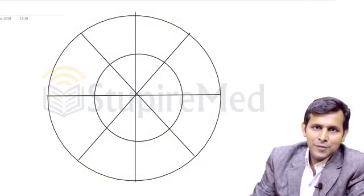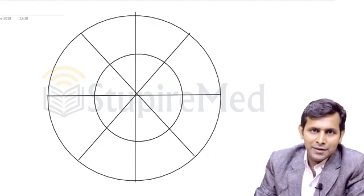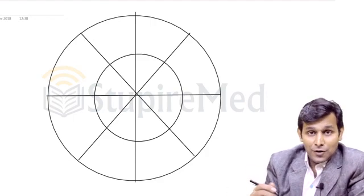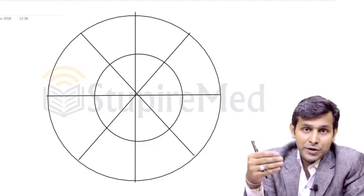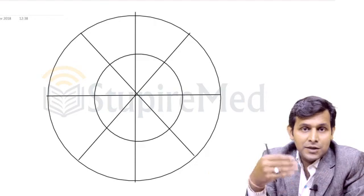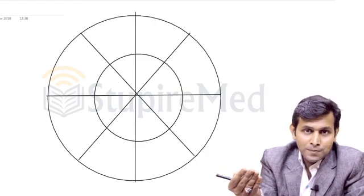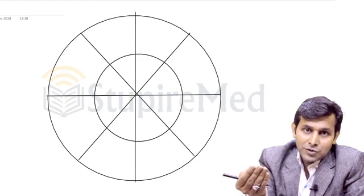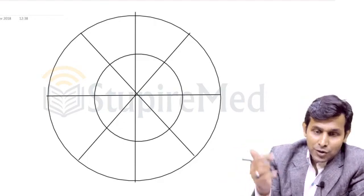Hello friends. Now let us try to learn the cardiac cycle and the phases of cardiac cycle in detail. As we have discussed, the cardiac cycle is 0.8 seconds, in which 0.1 second is the atrial systole, 0.7 second is the atrial diastole, 0.3 second is the ventricular systole, and 0.5 second is the ventricular diastole.